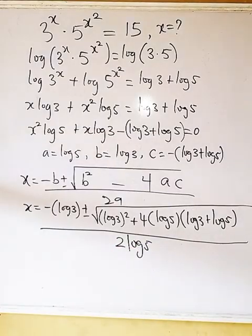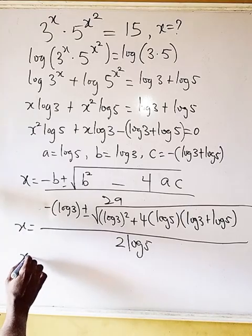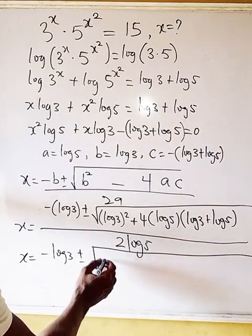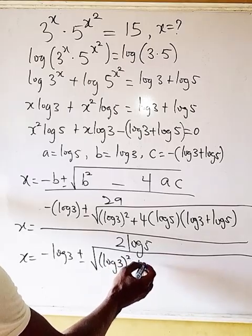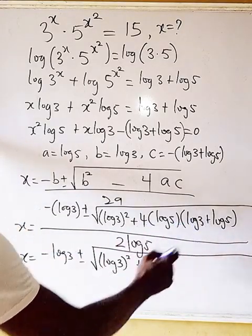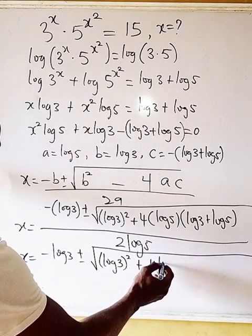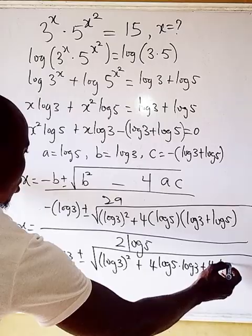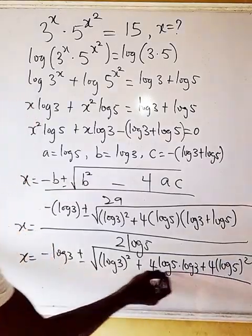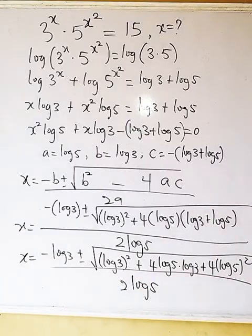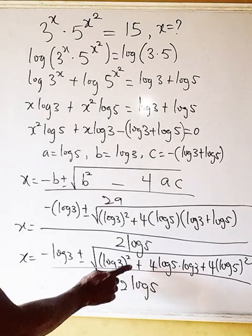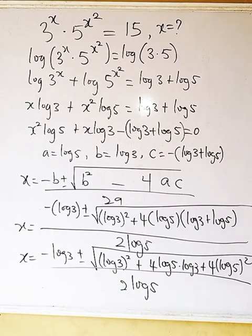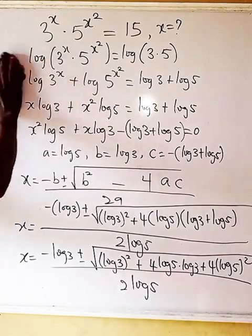Since c is negative, the minus and minus give plus, so the discriminant becomes: (log 3)² + 4·log 5·log 3 + 4·(log 5)². Let me rewrite this expression inside the square root.